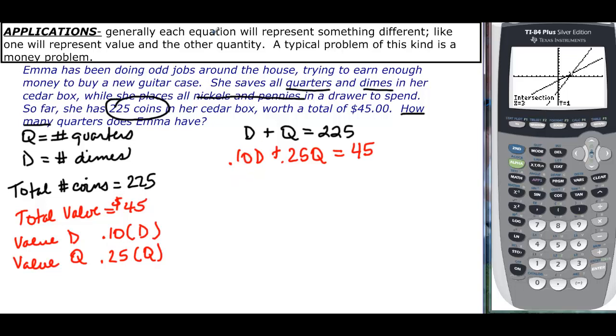I'm going to go ahead and do it by substitution. I know that multiplying by .1 is easier, so I'm going to solve for D. D is going to be 225 minus Q. Plugging in, I have .10, but I'm going to replace the D, plus .25Q equals 45. I'm replacing D with that 225 minus Q, so I have to distribute. That will give me 22.5 minus .10Q, or .1Q, plus .25Q equals 45.